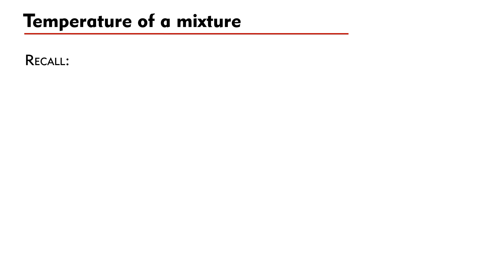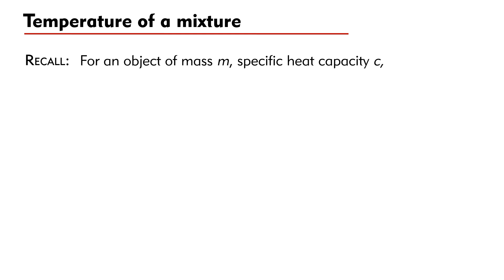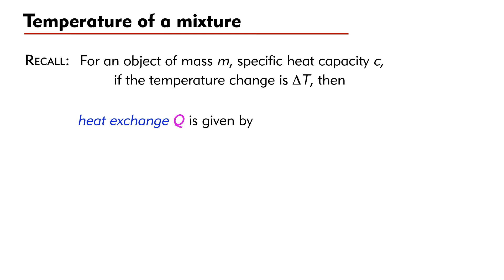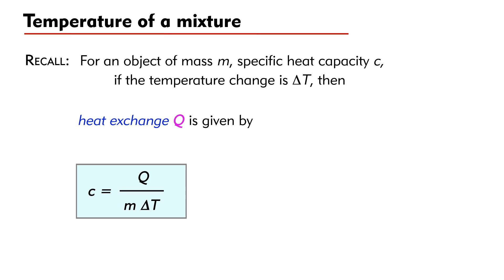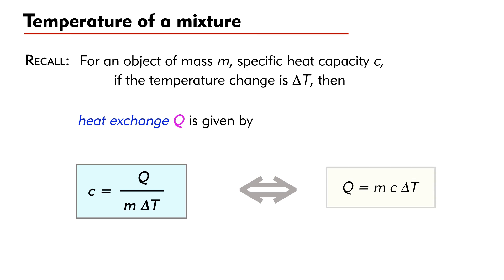Recall that for an object of mass M and specific heat capacity C, if the temperature change is delta T, the heat exchange Q is given by C equal to Q divided by M divided by delta T, or Q equal to M times C times delta T.